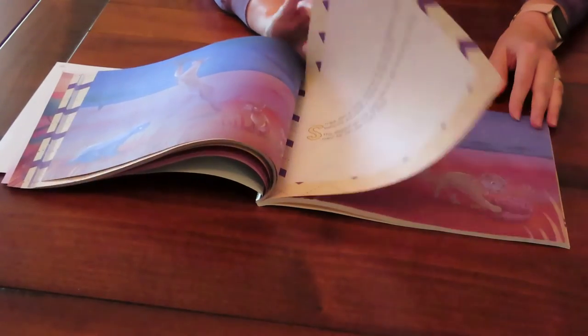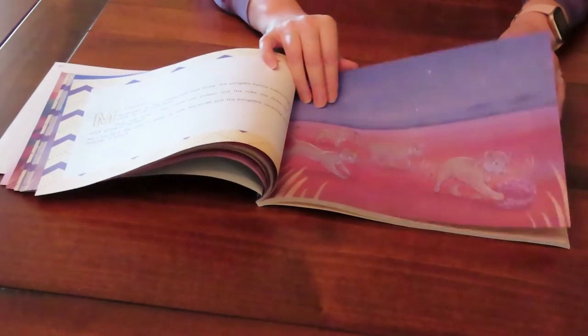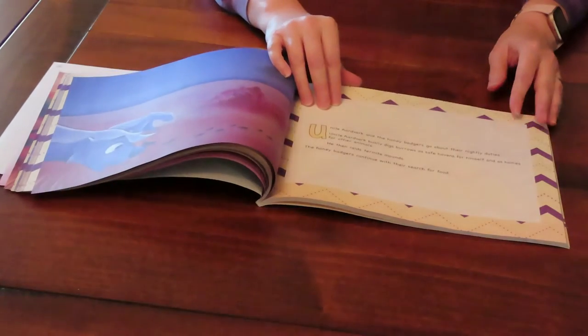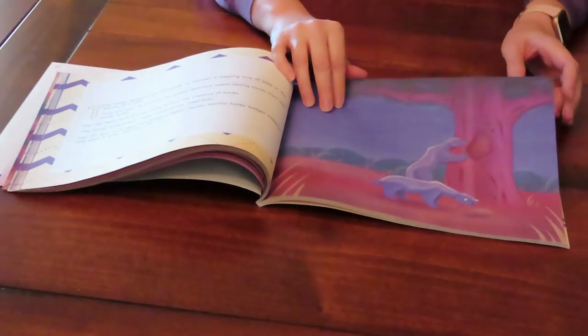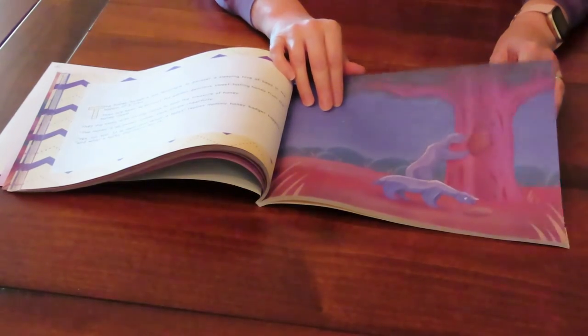Then a caracal, then some lion cubs, then the aardvark again. And finally they find some food for themselves, honeycomb.